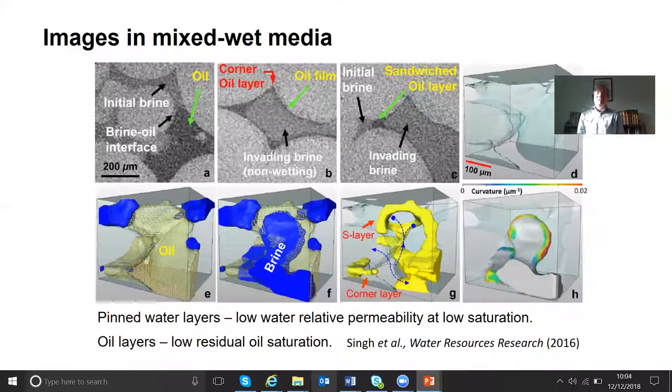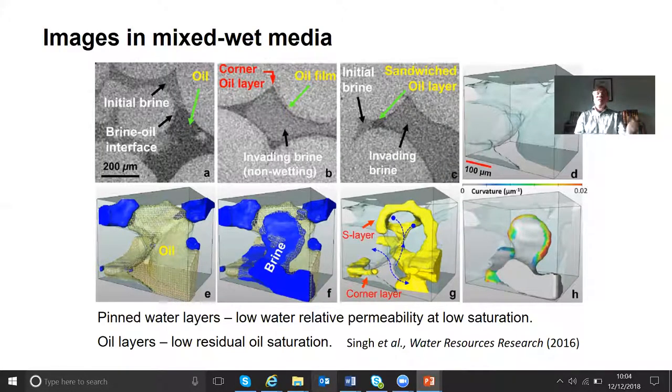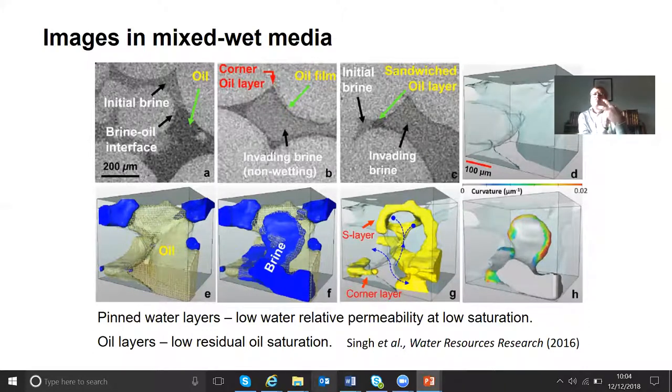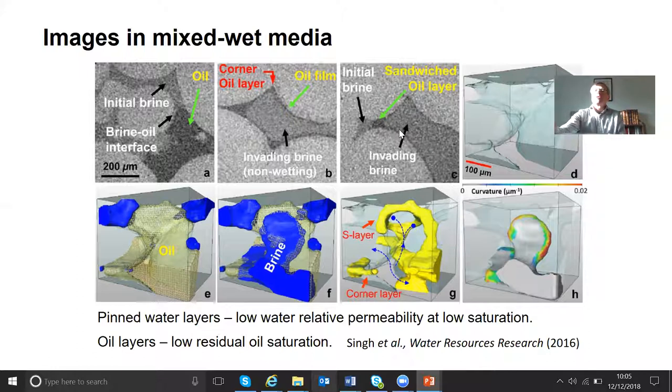Very interesting schematically, but what do we really see? Here are some x-ray images inside a rock that has been made oil-wet. There's initial brine in the nooks and crannies of the space, and then we inject oil. The top layer shows pictures that are two-dimensional cross-sections from three-dimensional images. In the raw x-ray absorption, the brine is in this gray color, the lighter gray is the rock, and the oil is the darker color.